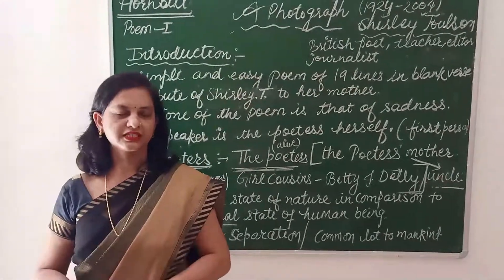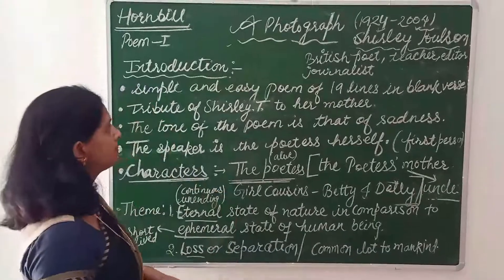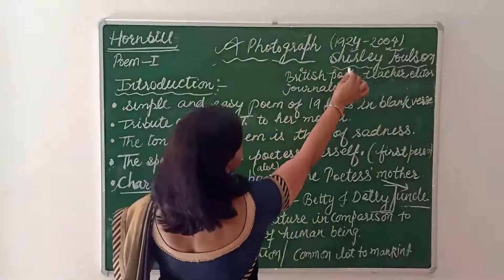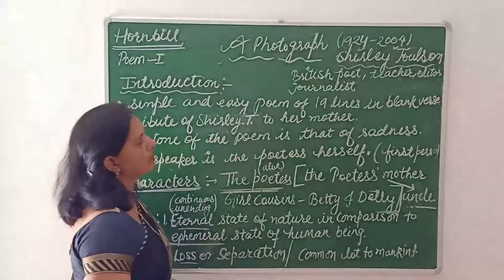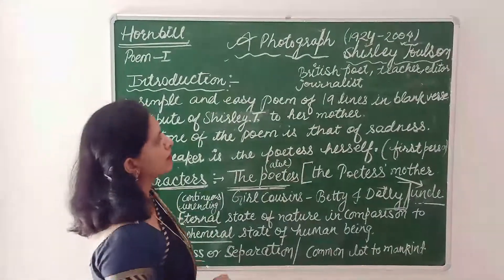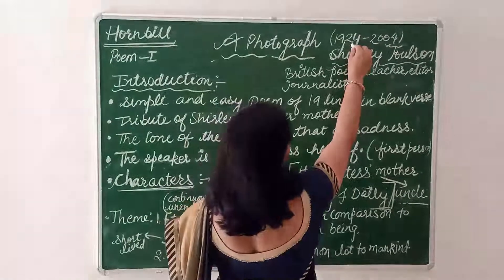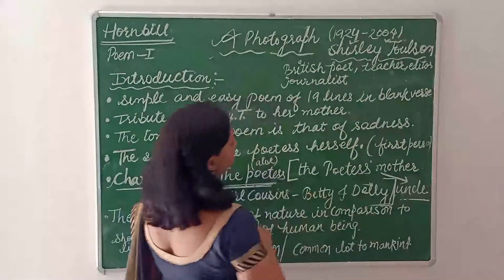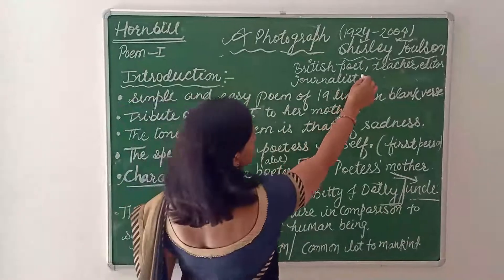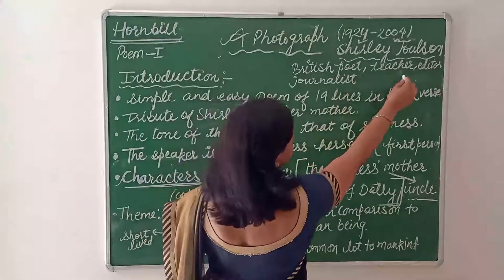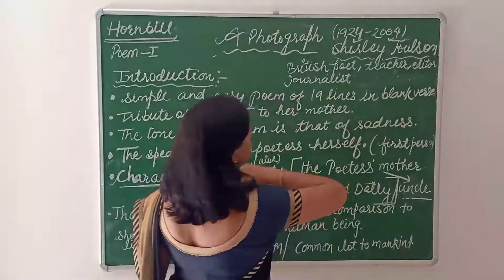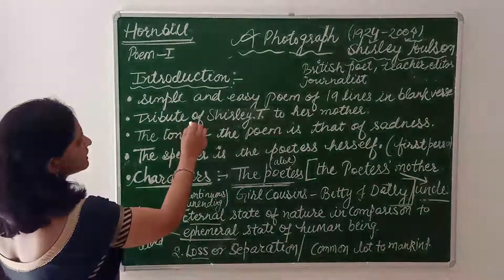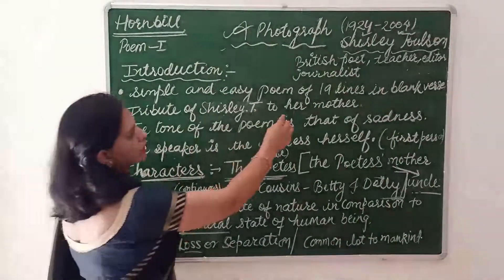Now let's discuss the poem. The name of the poem is 'A Photograph' composed by Shirley Tulshan. Shirley Tulshan was born in 1924 and died in 2004. She was a British poet, teacher, editor and a journalist. This poem is a touching tribute of Shirley Tulshan to her mother.